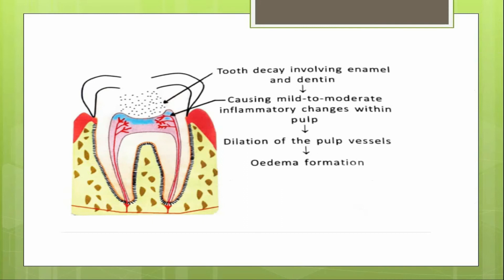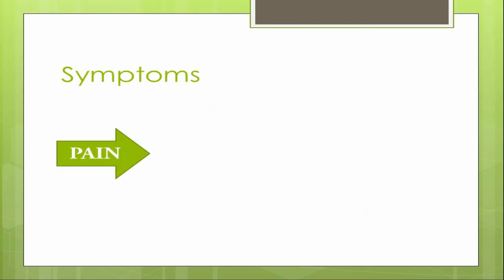There will be tooth decay, causing dilatation of the pulp vessels and edema formation. The most common presenting symptom for a patient with acute reversible pulpitis will be pain. These lesions of the pulp can easily be diagnosed from the patient's history, so whenever you take a history you should take a detailed pain history from the patient so that diagnosis of these lesions will be very easy.